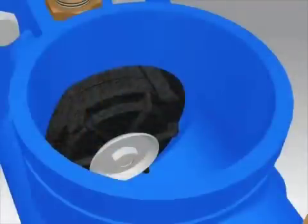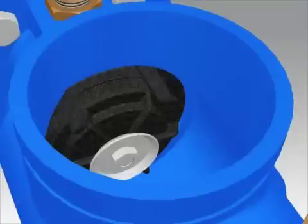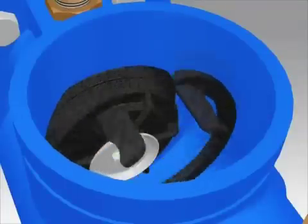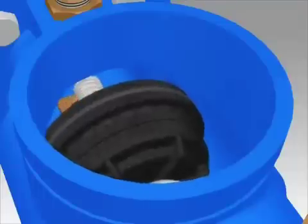To remove the number 1 check valve, locate the two tabs of the plastic retainer at the top of the number 1 check. Grasp the two tabs and squeeze ends together. Then pull straight back and the retainer should slide out of the groove. Remove the number 1 check assembly.